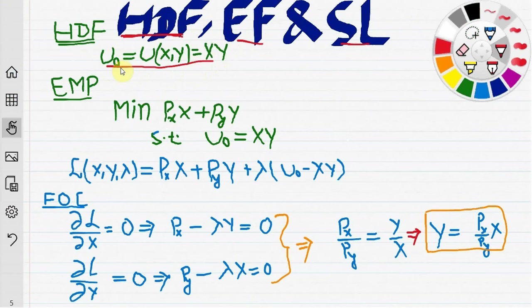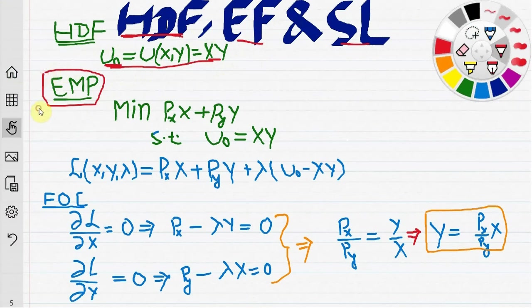Assume that the consumer has to obtain a fixed utility u0 from the consumption of two commodities x and y. So his utility has been fixed at u0. To derive the compensated demand curves or the Hicksian demand curves, we set up the expenditure minimization problem.